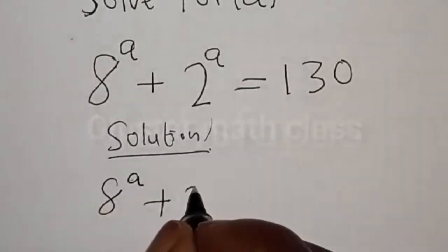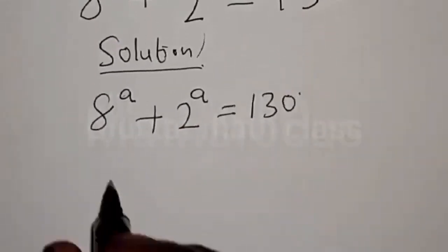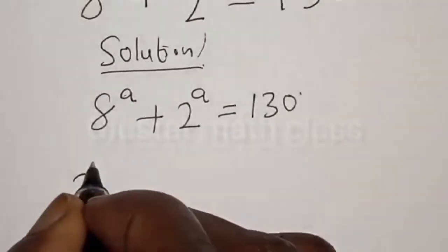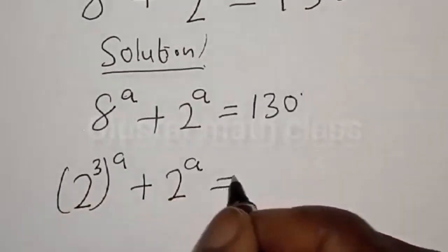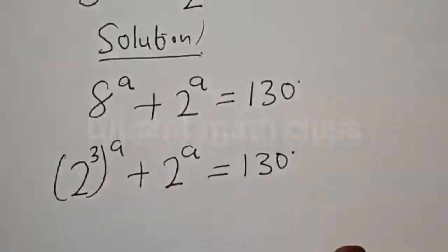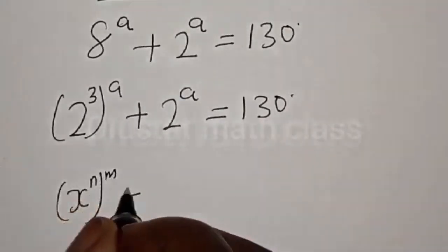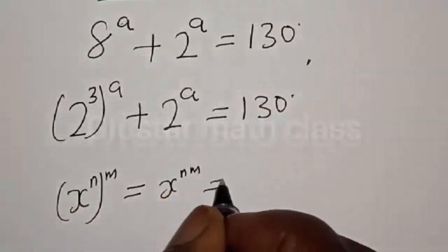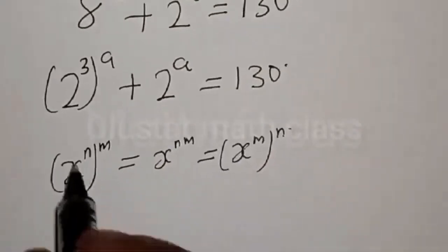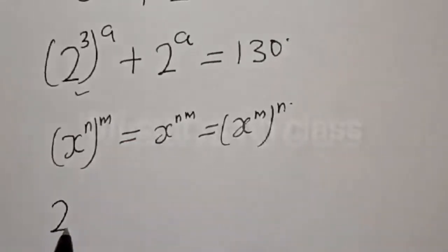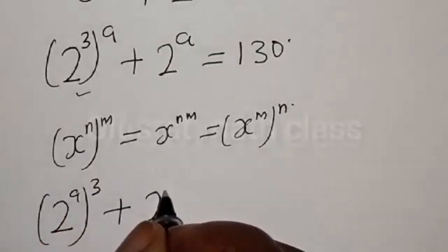We have the given equation 8 raised to power a plus 2 raised to power a is equal to 130. Then 8 raised to power a can be expressed as 2 raised to power 3, raised to power a. Remember, if you have s raised to power n raised to power m, that is the same thing as s raised to power n times m, which equals s raised to power m raised to power n.